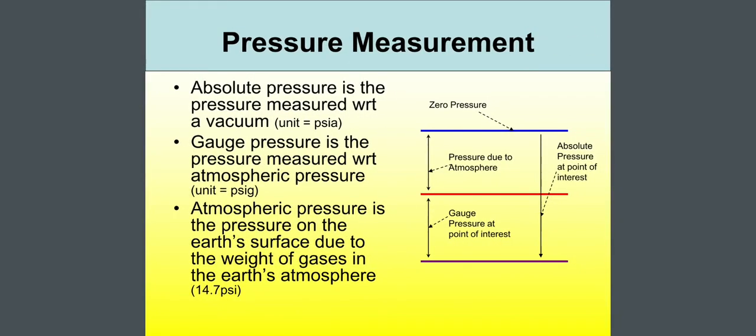Pressure measurement. Absolute pressure is the pressure measured with respect to a vacuum, unit PSIA. Atmospheric pressure is the pressure measured with respect to atmospheric pressure, unit PSIG, and atmospheric pressure is the pressure on the earth's surface due to the weight of gases in the earth's atmosphere, 14.7 psi. Look at the figure. At the above, there is zero pressure, then pressure due to atmosphere, then gauge pressure at point of interest and absolute pressure at point of interest at the right corner.